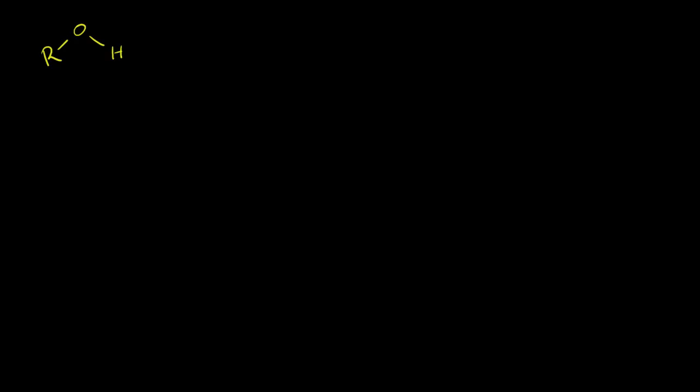Let's think about some of the properties of alcohol. The general formula for an alcohol is some type of group or chain of carbons bonded to an oxygen, bonded to a hydrogen. The oxygen will have two lone pairs.